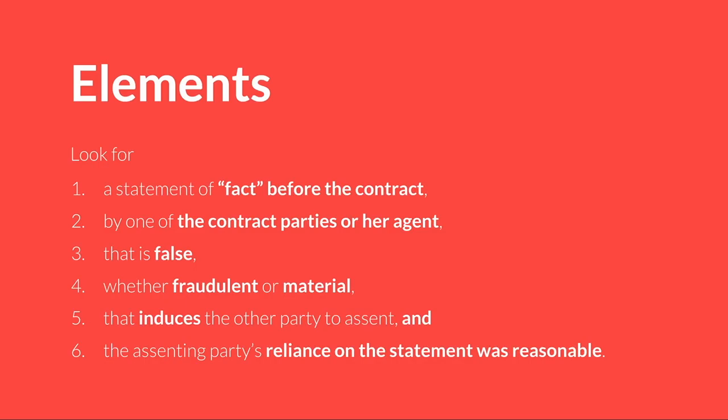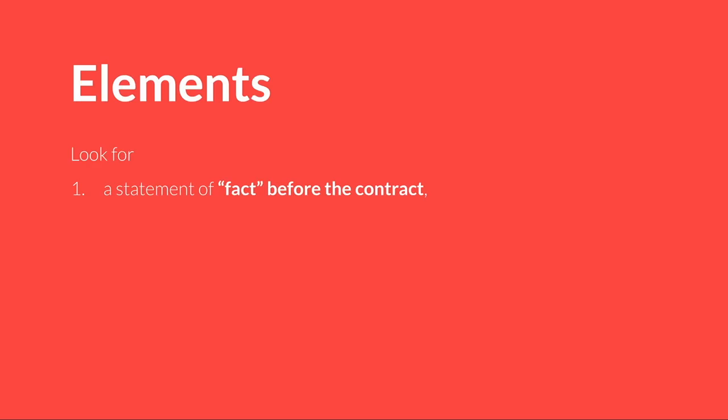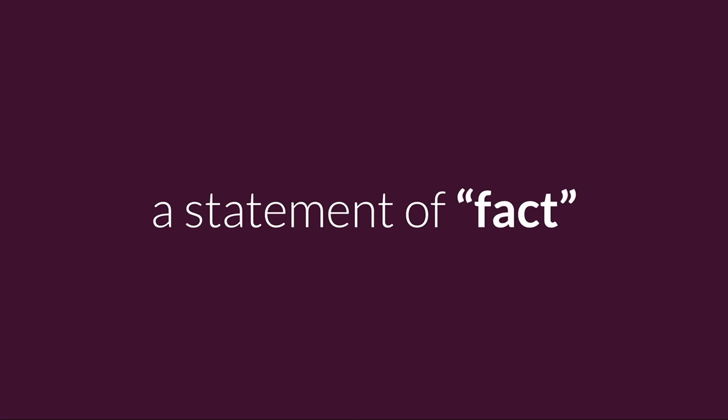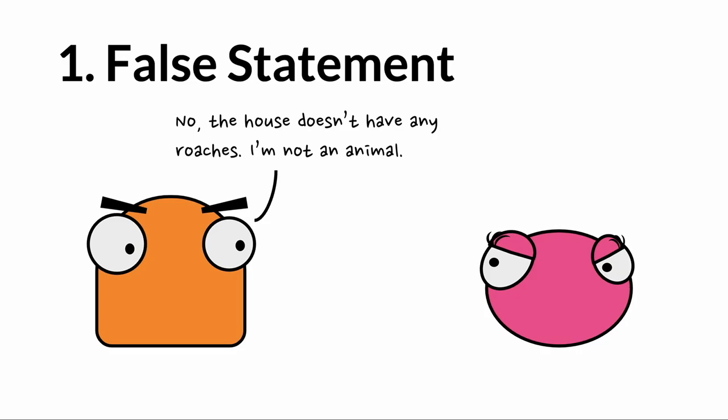Those are the six elements — they can be broken up in any number of ways. Let's start with element one: a statement of fact before the contract. A 'statement of fact' — what do we mean by that? When Bo says 'No, the house doesn't have any roaches,' he's asserting it as if it's a fact. Even though it's false, we're saying he's making an assertion as if it is factually the case. We use the word 'fact' to distinguish it from an assertion of opinion.